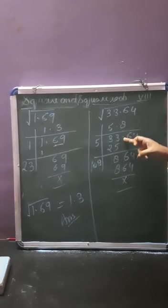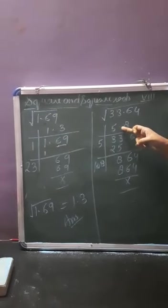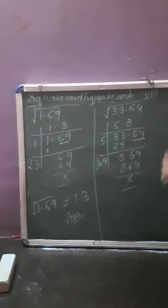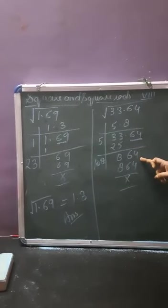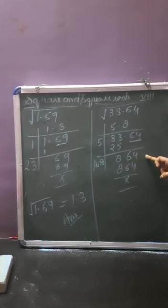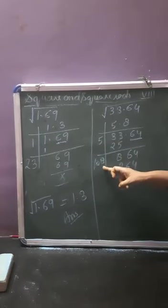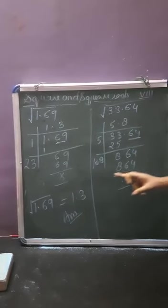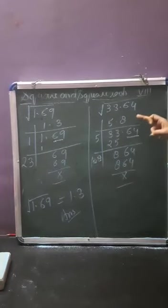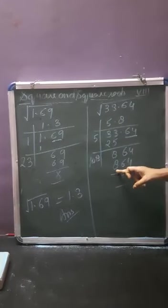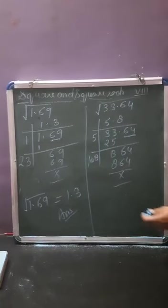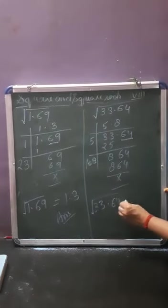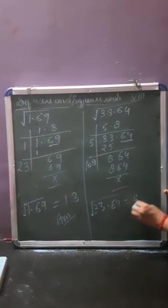Now after 33, the point is here, so you will put a point over here in the answer. 5 plus 5 is 10. In pair, we have 64, so you note down 64 over here — now you have 864. By which number should you multiply? In the ones place, 8 times something gives 64 — we get 4. So we multiply 108 by 8 to get 864, and the remainder is 0. So the square root of 33.64 is equal to 5.8.